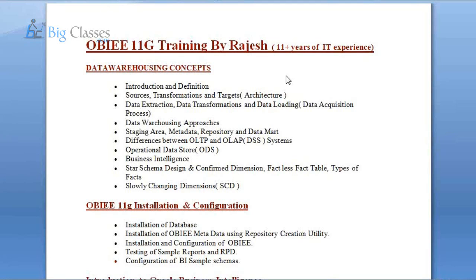We talk about all four characteristic features, and then we go into the data warehouse architecture — what are the components, what are the stages, what are the sources in a data warehouse process, what transformations are used, and what is the target. We talk about all these aspects, and then we talk about the ETL process.